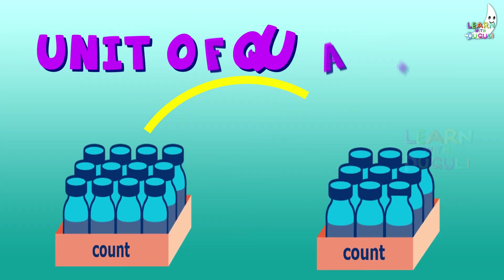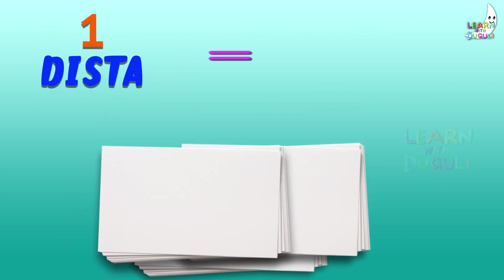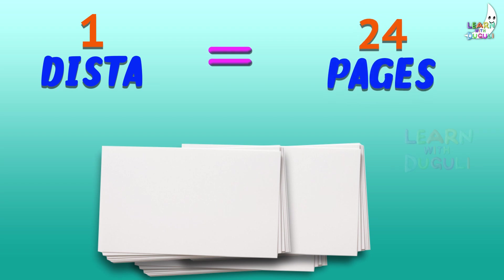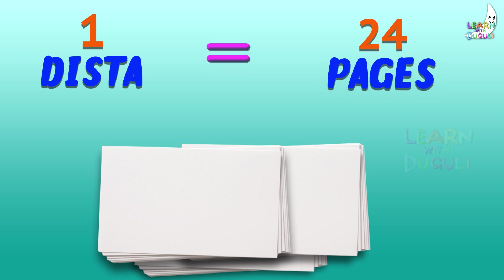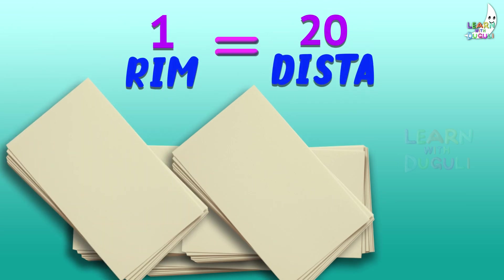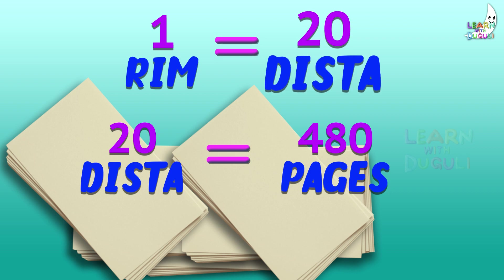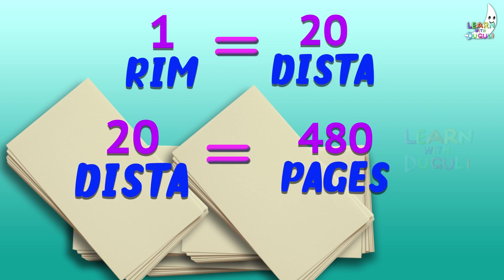Unit of Quantity: 1 dista is equal to 24 pages. 1 rim is equal to 20 dista, which equals 480 pages.